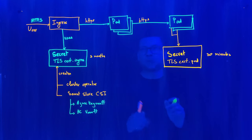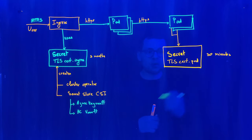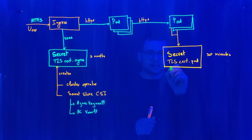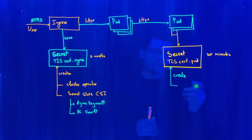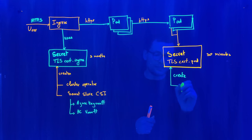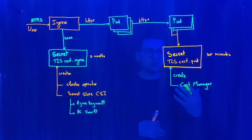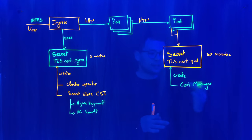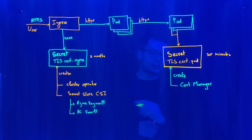Moving to the pods: inside the cluster we can use short-lived TLS certificates, so we can use a solution embedded inside the cluster itself. Manually creating a TLS certificate every 30 minutes would be a lot of work for the cluster operator, so what we should use here is cert-manager. Cert-manager is a component installed inside the cluster that provisions TLS certificates — from Let's Encrypt or using a self-signed certificate — and exposes them as secrets to our pods. This needs to be configured for each deployment.